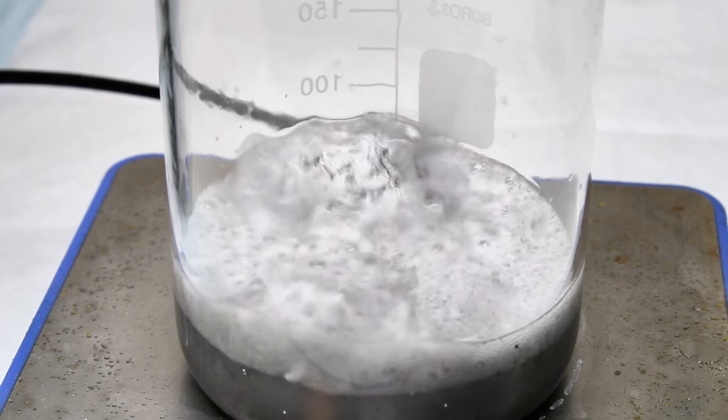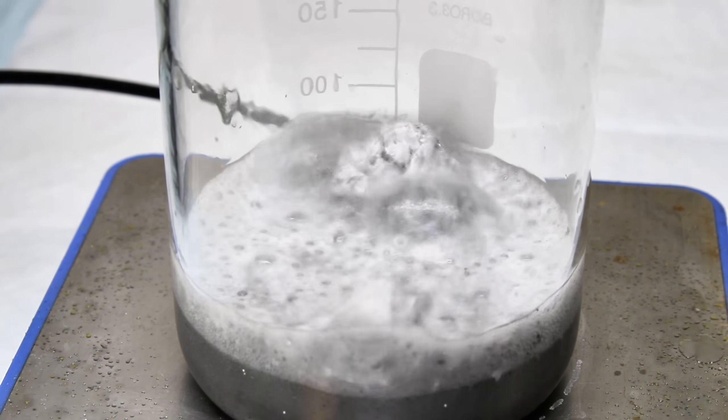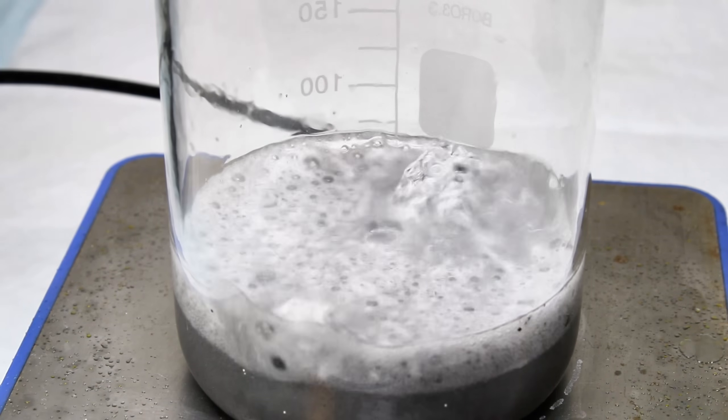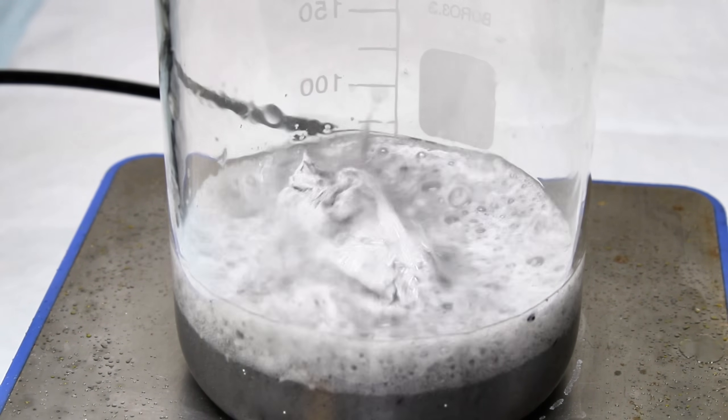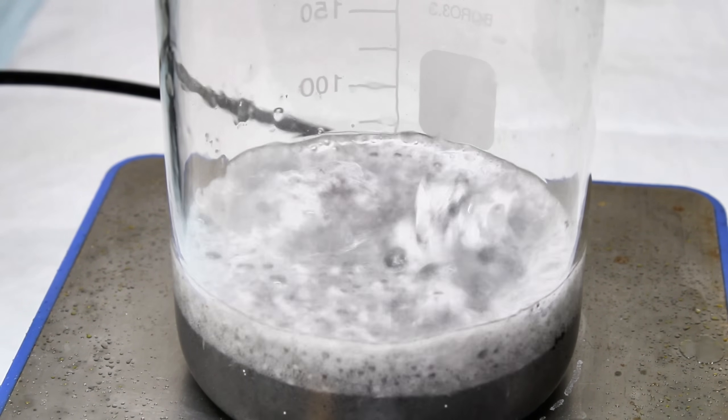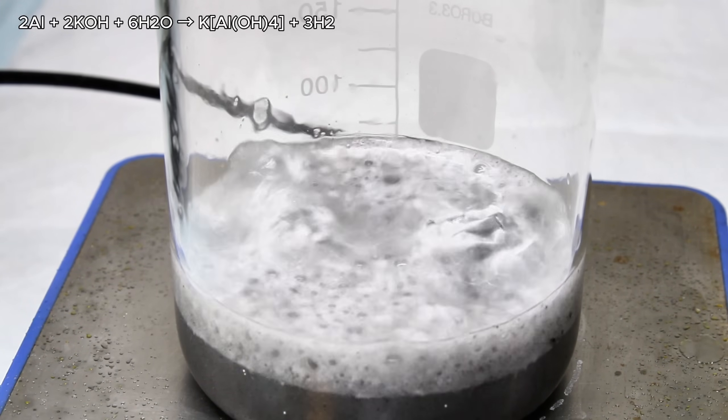As you've been watching here, when aluminum foil is added to the caustic solution, it's quickly dissolved in a violently exothermic reaction that produces copious volumes of explosive hydrogen gas and choking caustic fumes.